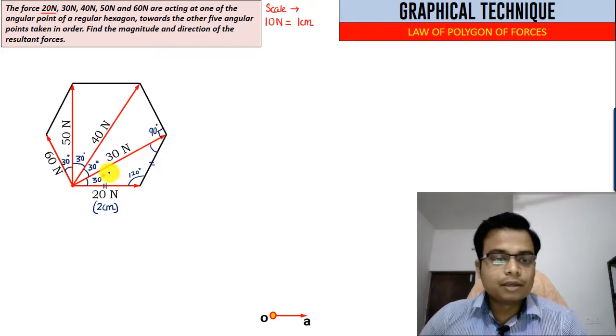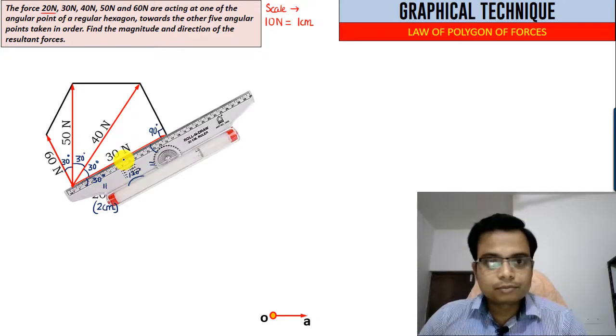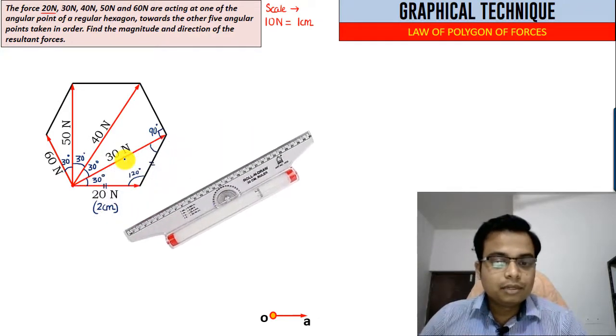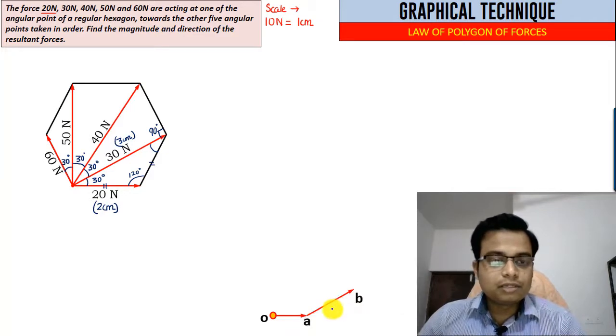You need to keep your roller scale lined up or aligned along this 30 Newton force, roll it down, and then corresponding to this 30 Newton you need to draw a line of 3 centimeters this way. This is 3 centimeters, that means this is essentially 30 Newtons, and this represents a force of 20 Newtons.